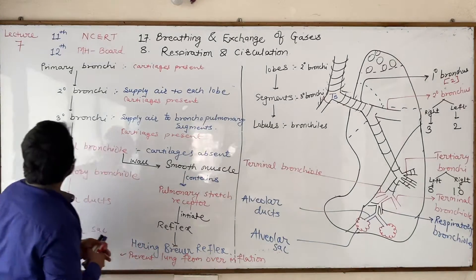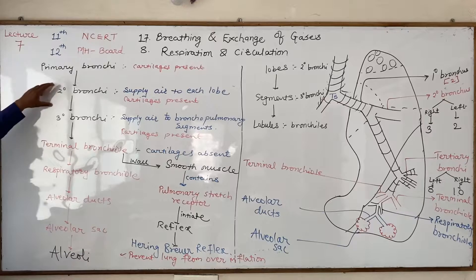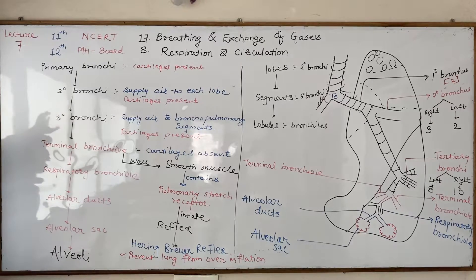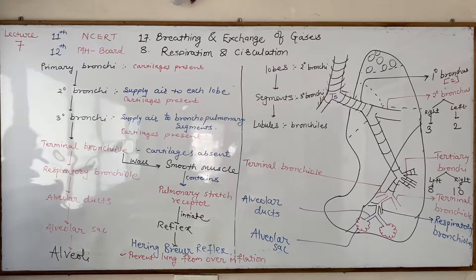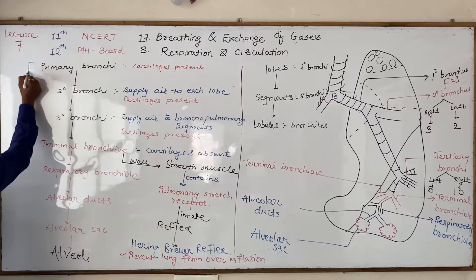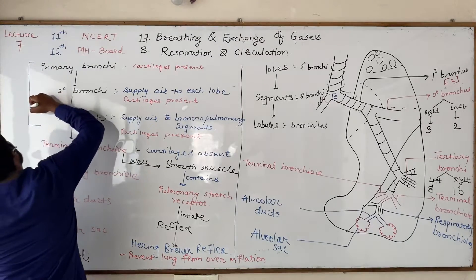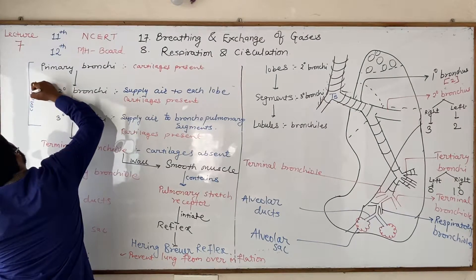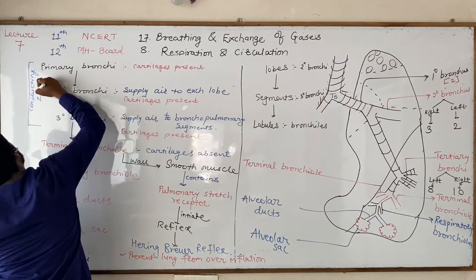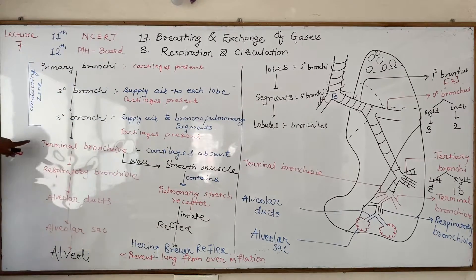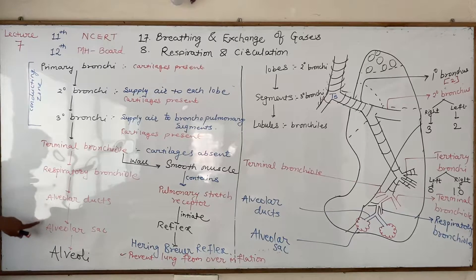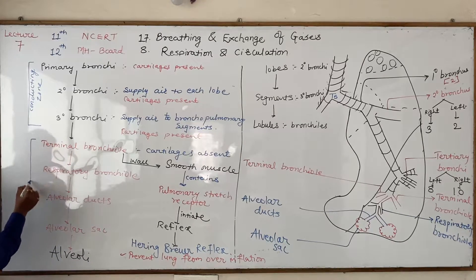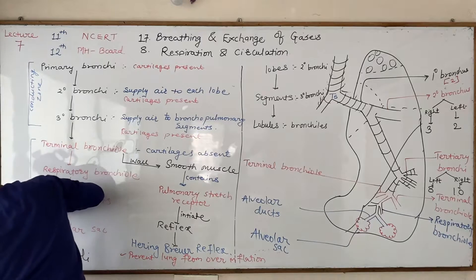The part consisting of primary bronchi, secondary bronchi, and tertiary bronchi is known as the conducting zone. The remaining part — terminal bronchioles, respiratory bronchioles, alveolar ducts, alveolar sac, and alveoli — is called the respiratory zone.